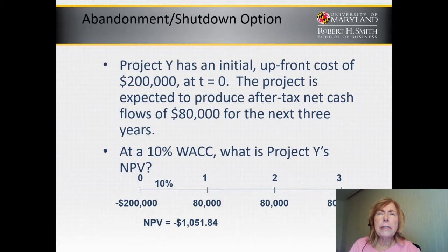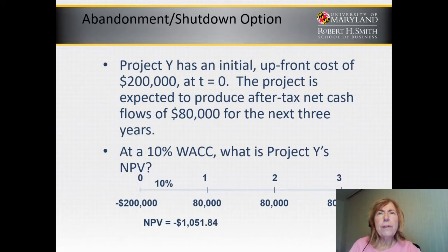First, we draw a timeline with three years and we add the negative cash flow of $200,000 at time zero to represent the upfront cost. Then we add the $80,000 cash inflows each year for the next three years. If we calculate the NPV of this project, we'll obtain a negative NPV, so we shouldn't undertake the project.